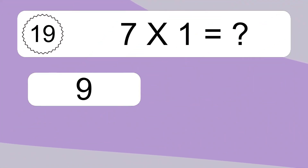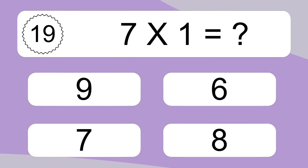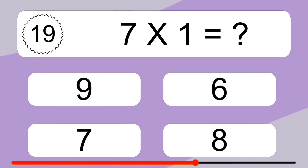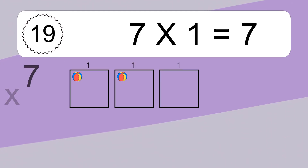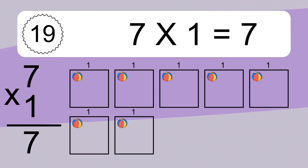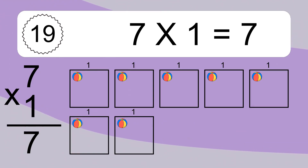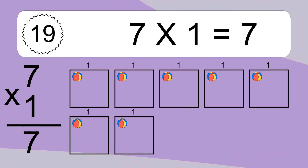7 times 1 equals what? 7 times 1 equals 7. We have 7 boxes and each box has 1 colorful ball inside. If you count all the balls in all the boxes together, you will have 7 times 1 balls. This equals 7 balls.